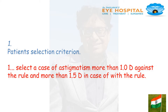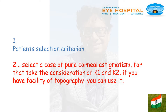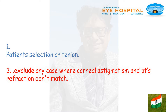Criteria 1: Select a case of astigmatism more than 1D against the rule, and more than 1.5D in case of with-the-rule astigmatism. Criteria 2: Select a case of pure corneal astigmatism. For that, take into consideration K1 and K2 only. If you have facility of topography, you can use it.